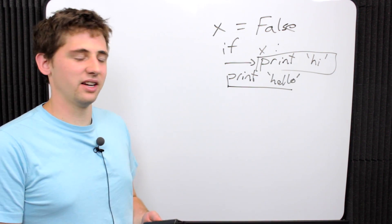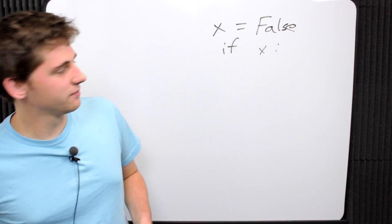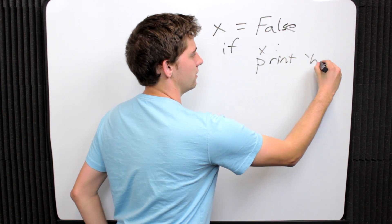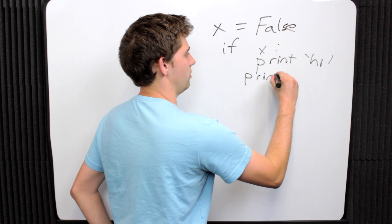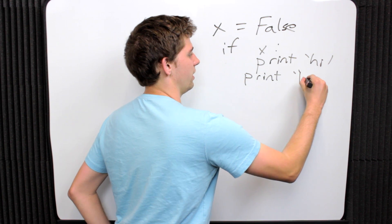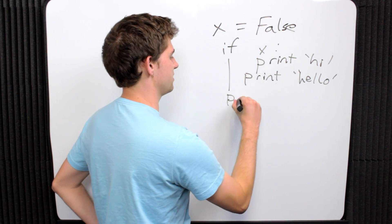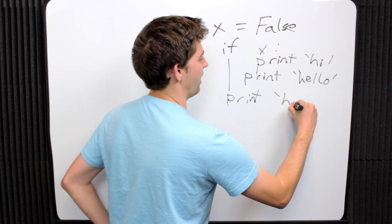Let's look at a slightly more complicated example. In this case, we have print 'high', then we have print 'hello', and then aligned with this, we have print 'high' again.